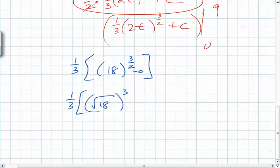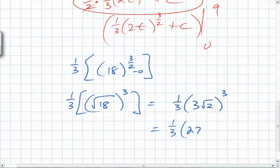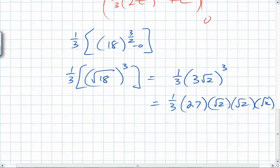To the 3rd. How do you break up the square root of 18? It's 3 root 2. So it's 1 third times 3 root 2 to the 3rd. So what does that become? 1 third, 27 times root 2 times root 2 times root 2. So what does that become? 9 times 2.